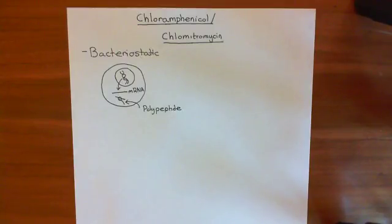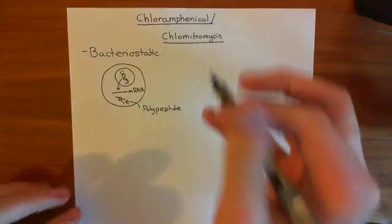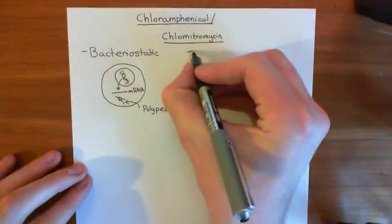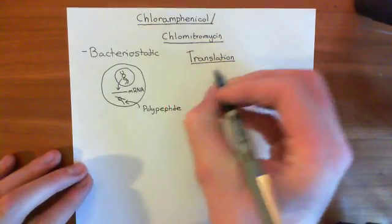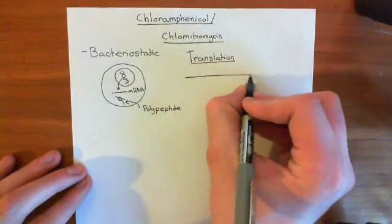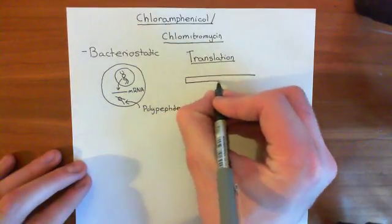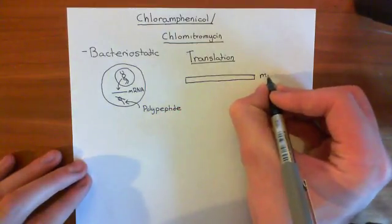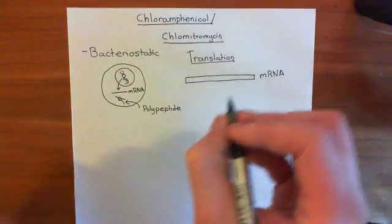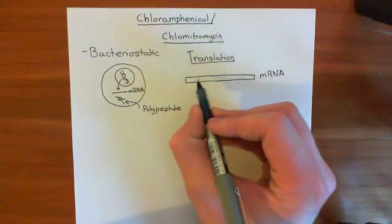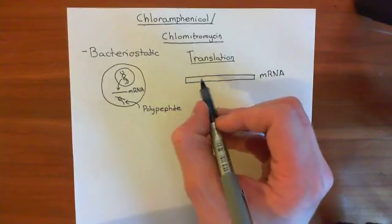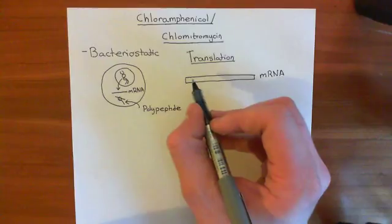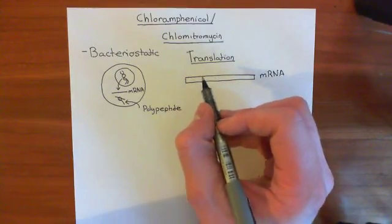To understand how it's going to block translation, we need a solid understanding of how translation actually works. We begin with our mRNA strand - a single-stranded nucleic acid with loads of organic bases polymerized together. They are ribose nucleotides, meaning the sugar that forms the sugar-phosphate backbone is ribose rather than deoxyribose.